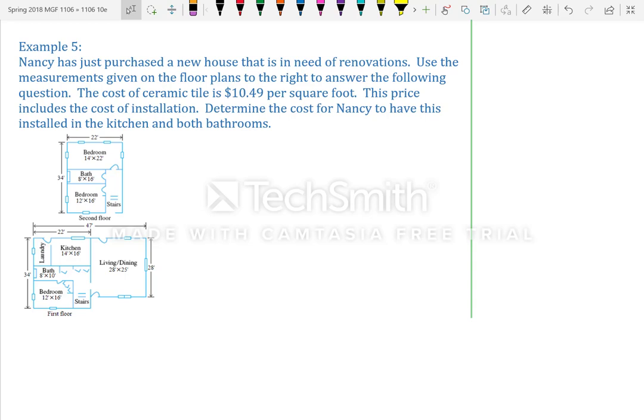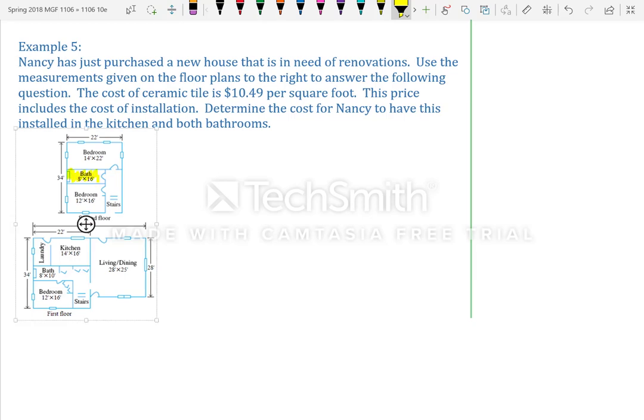Nancy just purchased a new house that is in need of renovations. Use the measurements given on the floor plan to the right to answer the following question. The cost of ceramic tile is $10.49 per square foot, and this price includes the cost of installation. Determine the cost for Nancy to have tile installed in the kitchen and both bathrooms. So, we want to know the cost to do both bathrooms and her kitchen. So, we need to know the area of one of the bathrooms, both of them, the first one, the area of the second one, and then, the area of the kitchen.